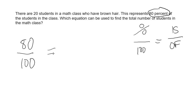So we do not know how many students are in the math class. So the of, the students in the class, is the unknown. So we're going to put the question mark or the variable where the unknown is. We do not know how many students are in a class, but we do know that of the students in the class, 20 students have brown hair.